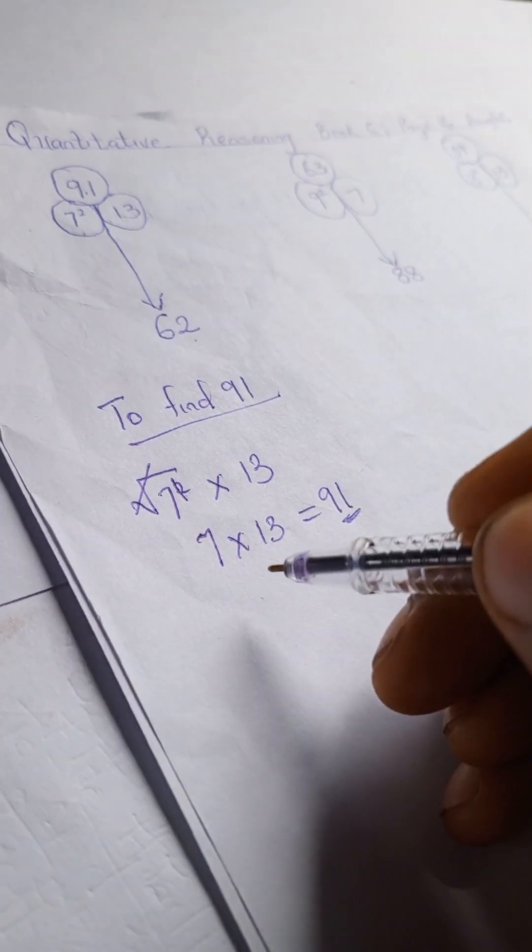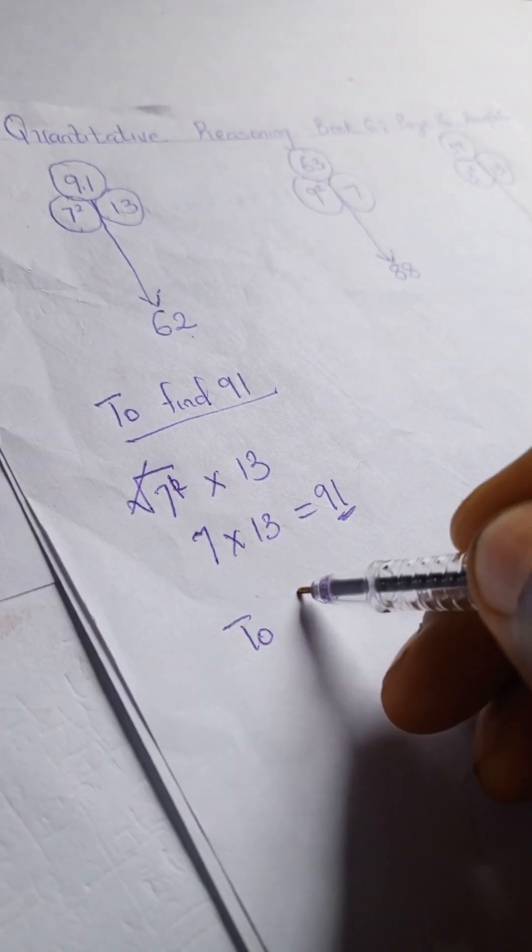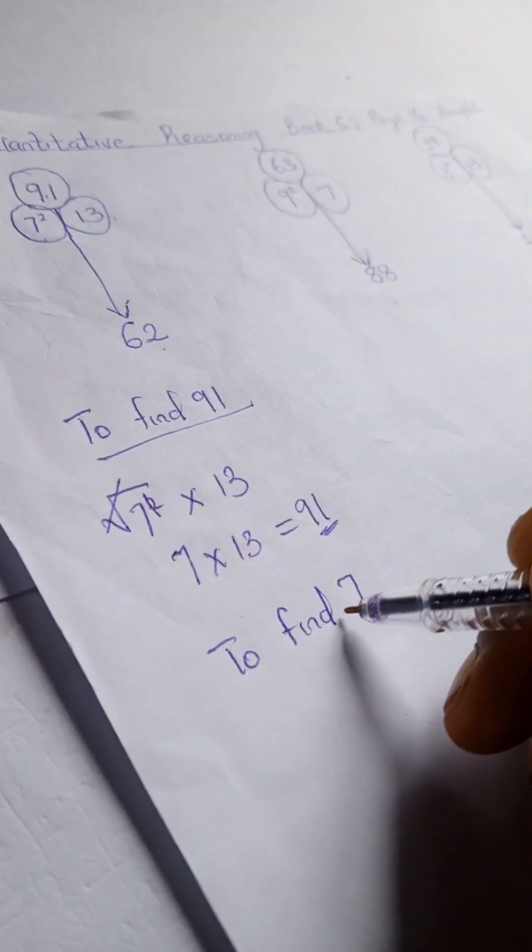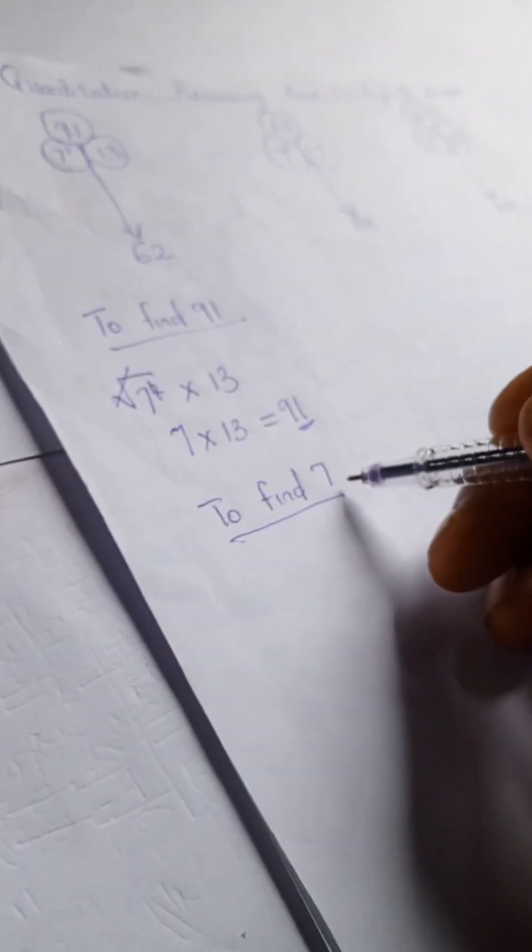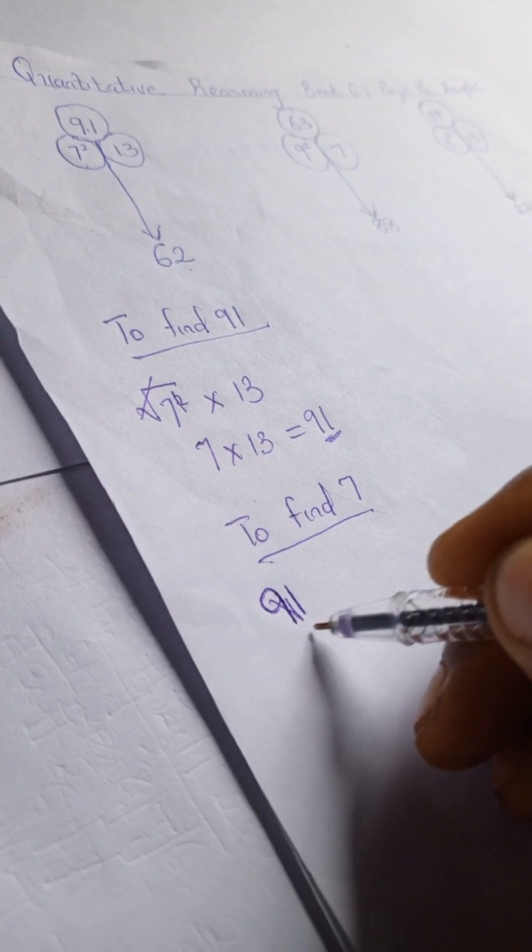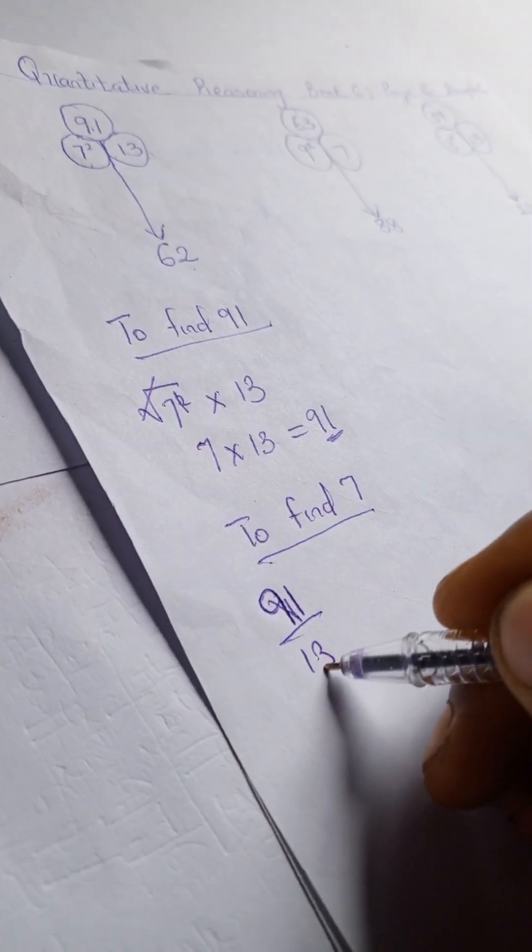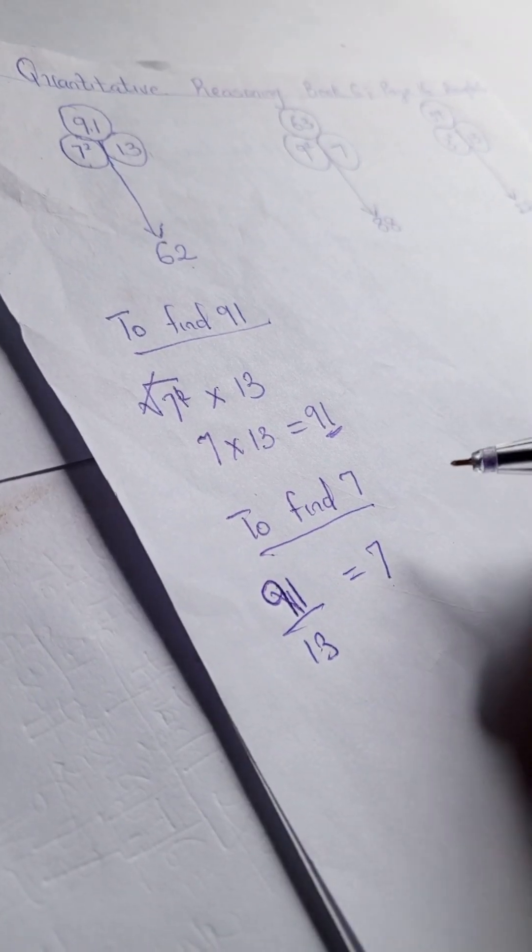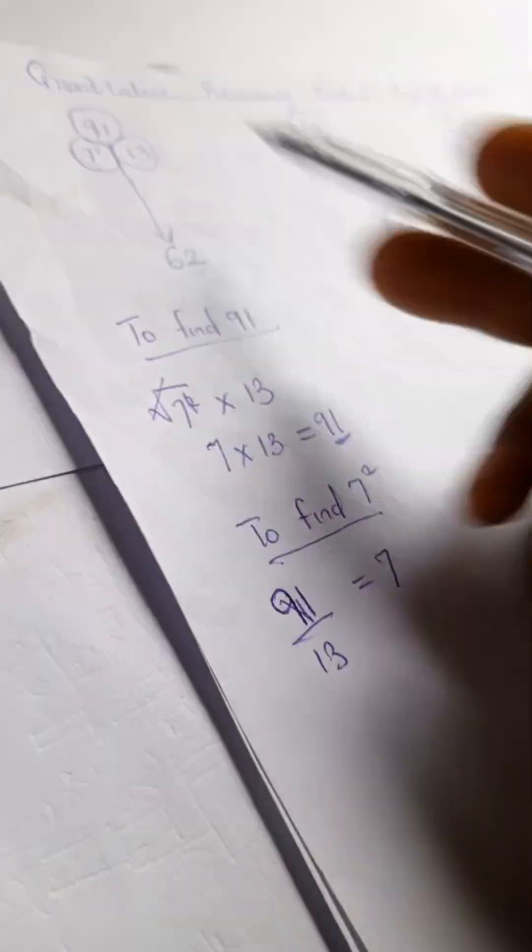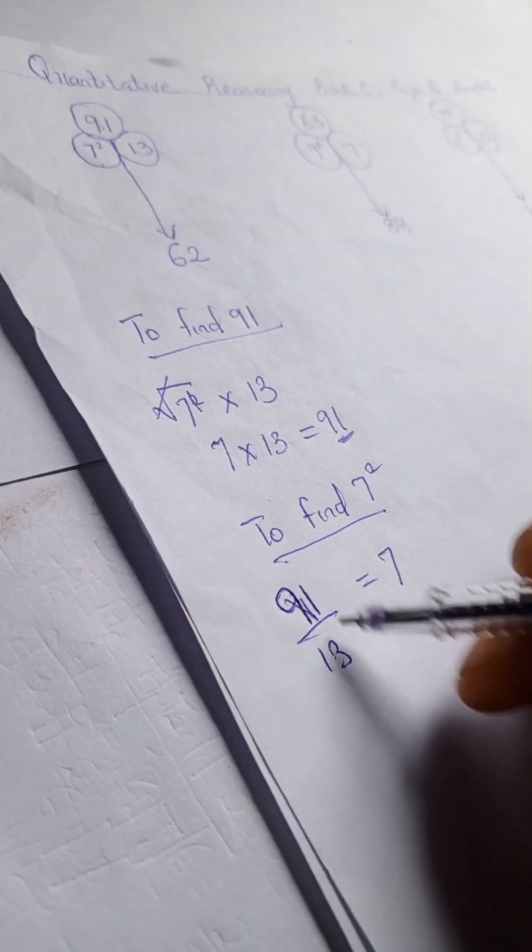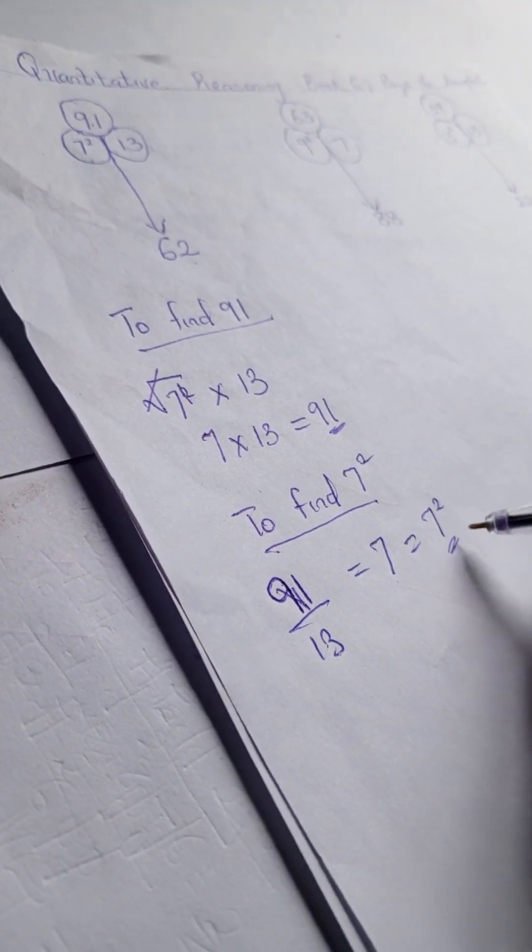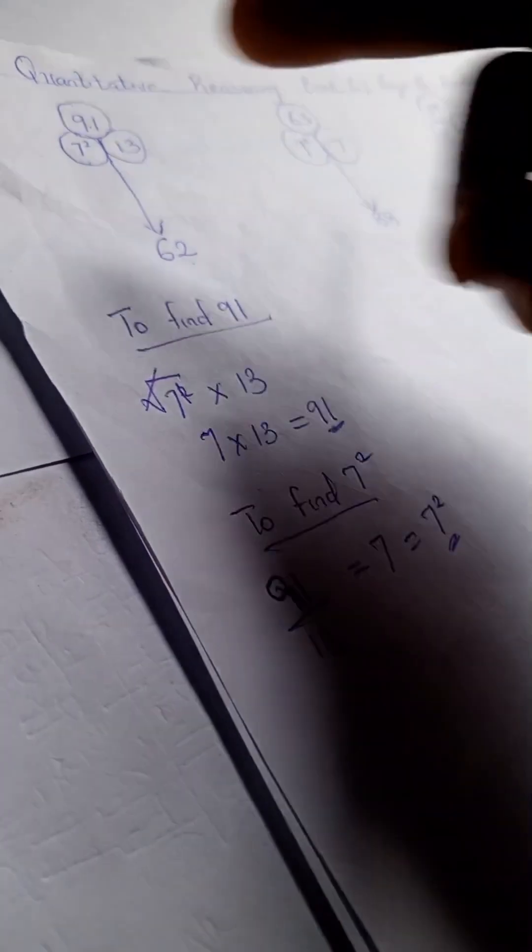So to find 7, we have 91 divided by 13, that will give us 7. So we're actually looking for 7 squared. So 91 divided by 13 is 7, so when you square 7, you have your 7 squared. You're not expected to expand or calculate it to the end.